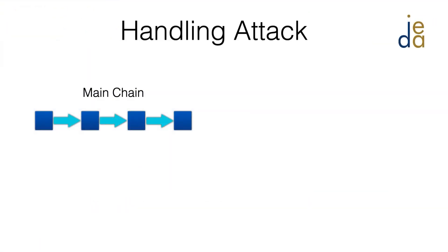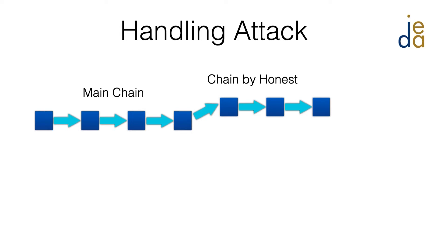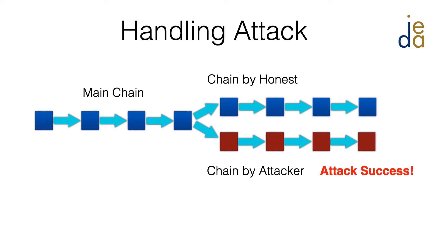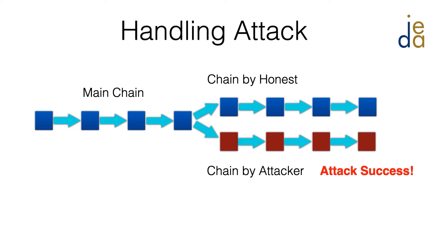I want to quickly demonstrate one particular aspect: security. Everyone on the network reaches consensus by sticking to the longest chain. However, malicious people can create a bad chain to attack the system. When the bad chain exceeds the good chain, we call it a successful attack. It turns out that the probability of a successful attack can be calculated based on a random walk model, which will be taught in one of our core courses.